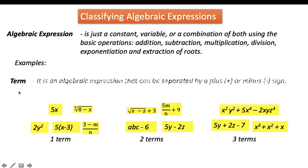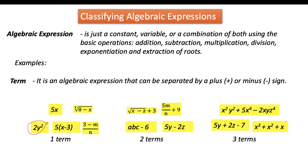What do we mean by term? It is an algebraic expression that can be separated by a plus or a minus sign. Notice that 2y squared and 5x don't have plus or minus, so they are considered as one term. But how about 5 times quantity x minus 3? It has a minus, so x and 3 are separated. But because of the parentheses, it is now considered as one group, multiplied by 5, so it is still considered as a single term — a one-term algebraic expression.